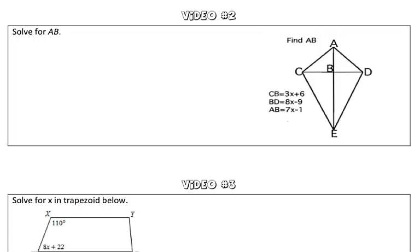In this problem, we are asked to solve for AB. Taking a look at this diagram, we know that this figure is a kite.